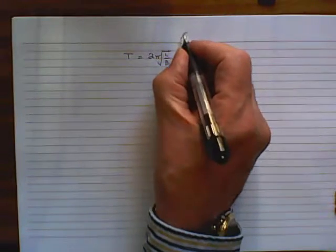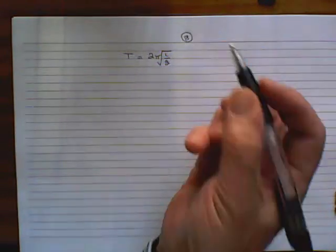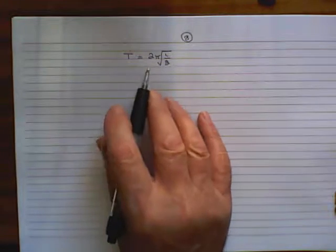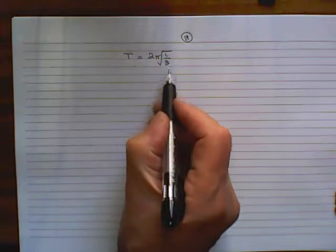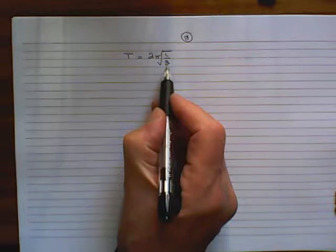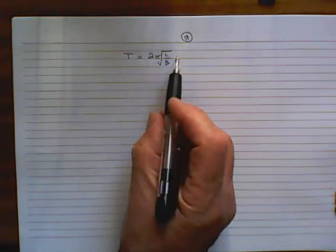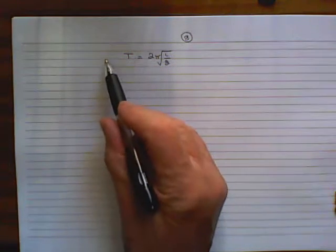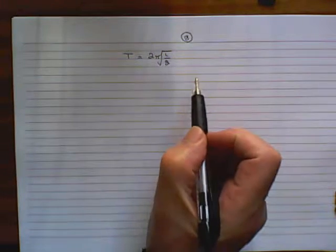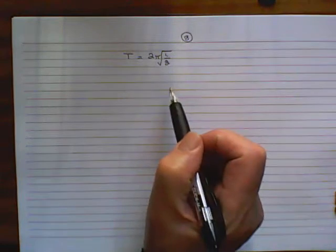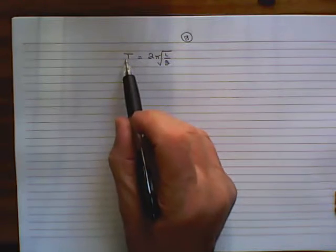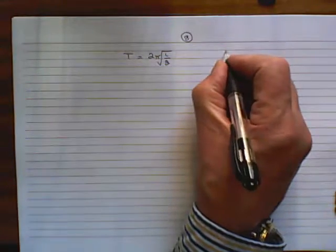So G is the new subject of the equation. What we need to do is to unclutter G. We need to get rid of everything that's surrounding G, so we get it on its own. And to get rid of it, we must do, from one side of the equation, what we do to the other side of the equation.